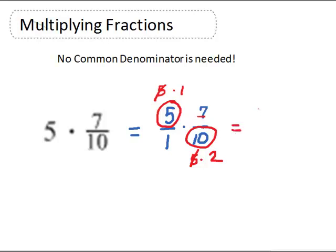1 times 7 is 7, 1 times 2 is 2, so we have 7/2 as our fraction. We'll be talking about how to switch fractions into mixed numbers, and 7/2 is 3.5 or 3 and a half.